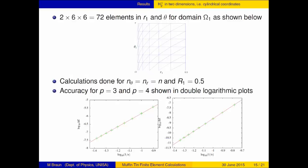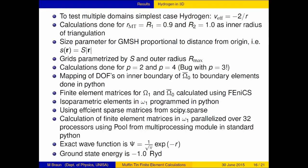I've done these calculations for r equals a. One value was one-half. Down here you can see that one reaches up to 10 to minus 7 accuracy by choosing order of the element 3 or 4. This is now for nitrogen. I have an inner radius of 0.9 and an outer radius of 10. The size parameter for GMSH becomes proportional to the distance from the origin, parametrized by S and the outer radius r_max.